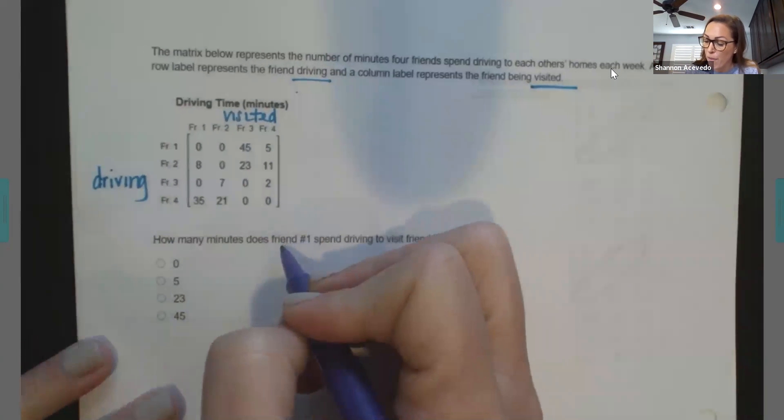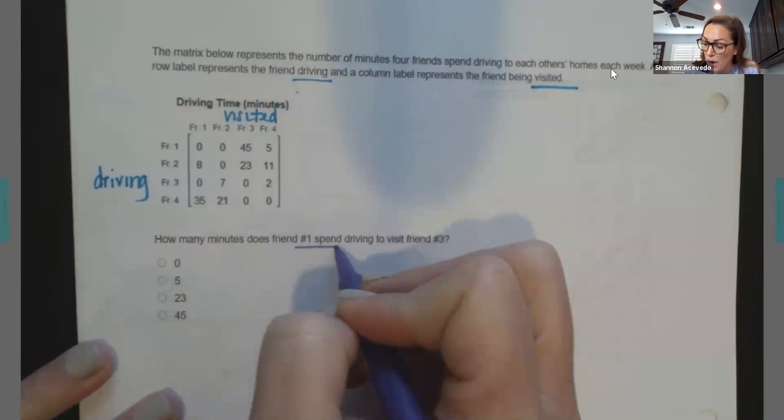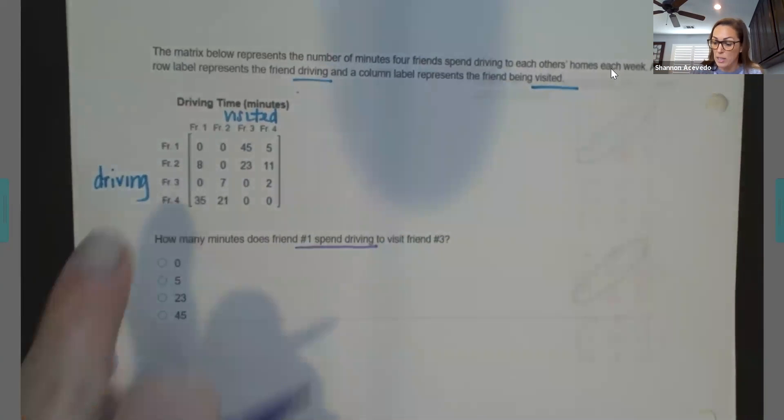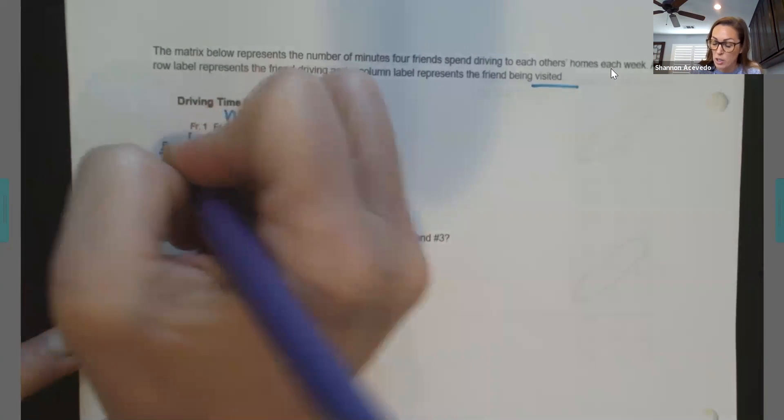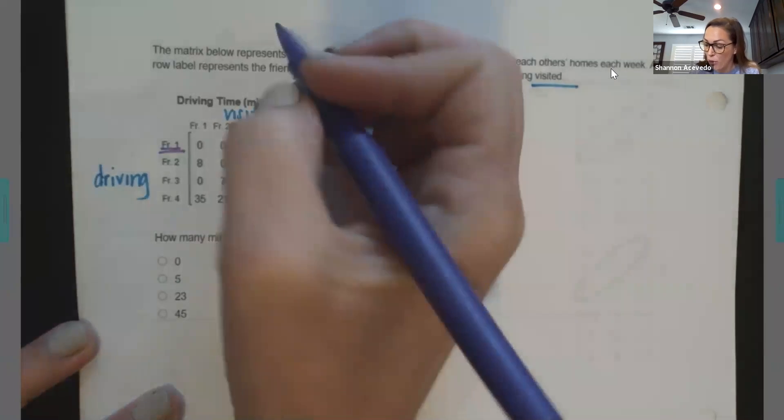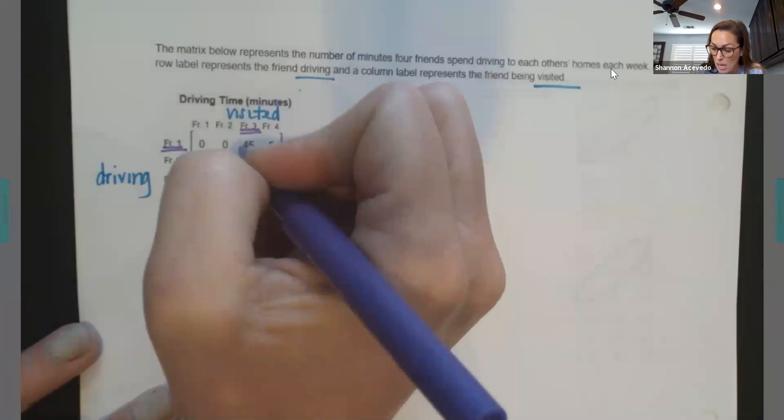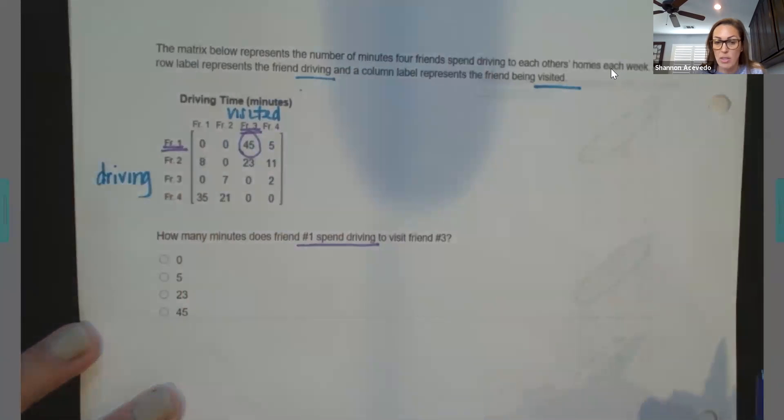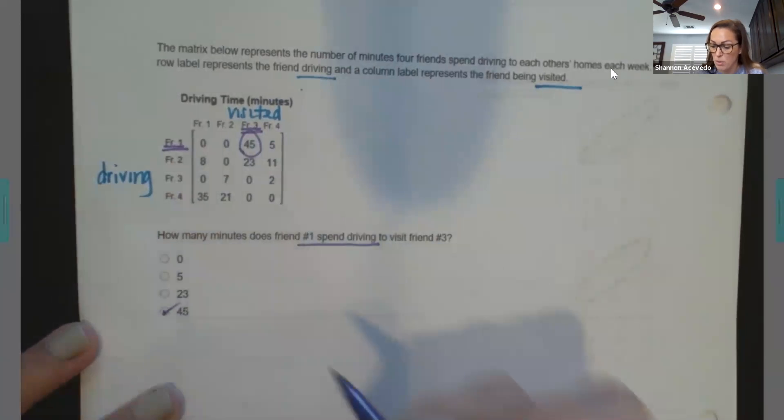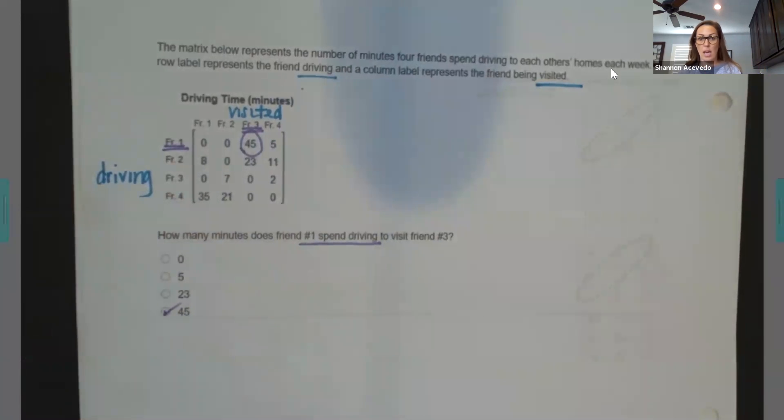So here's what the question says. How many minutes does friend one spend driving? So we're talking about friend one is driving. Friend one is driving to visit friend three. So we're going friend one to friend three. And we're right here at that value of 45, which is this one right here. And we're done.